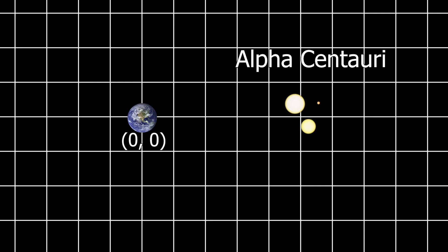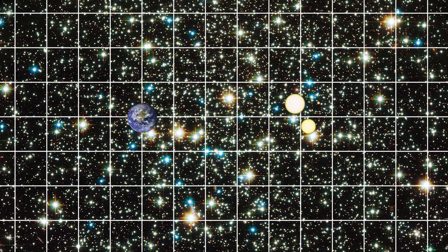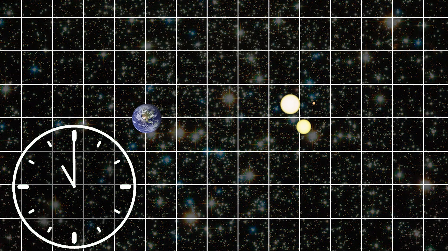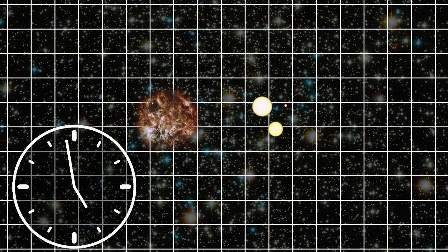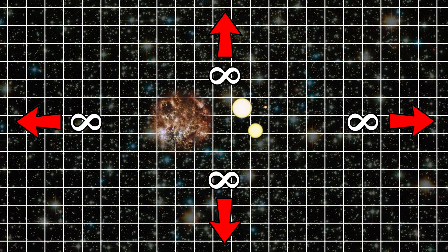Imagine measuring our universe by drawing it on an infinite grid with a spacing of one light year. Place Earth at the coordinates 0, 0, and say Alpha Centauri — that is roughly four light years away. Having that reference, plot the rest of the universe on the grid. This is what we call space-time. Now, look back in time halfway between now and the Big Bang — the grid now has a spacing of half a light year, but it's still infinite in all directions.